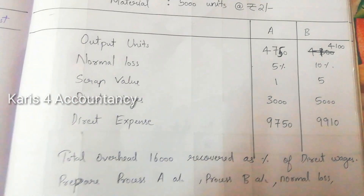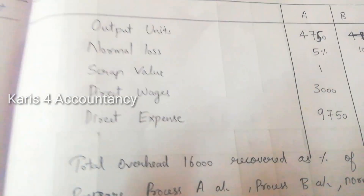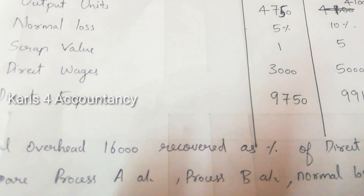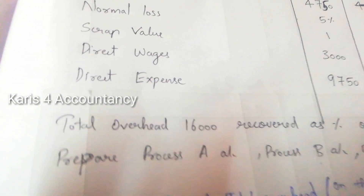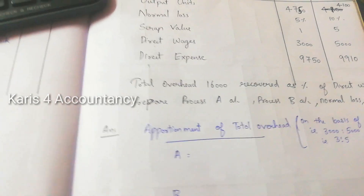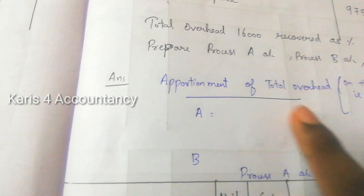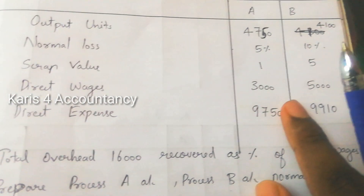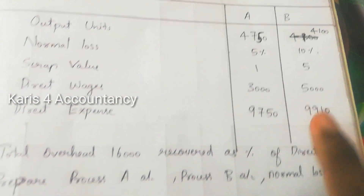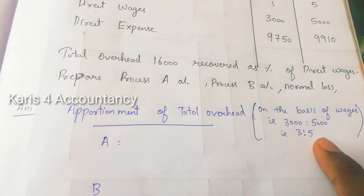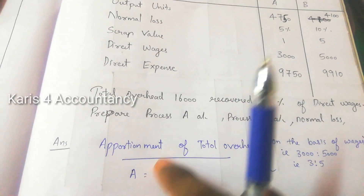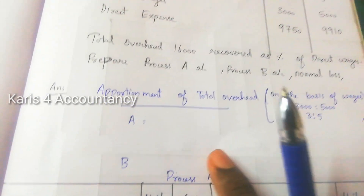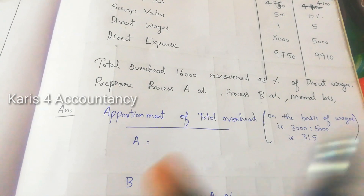Total overhead of Rs. 16,000 is recovered as a percentage of direct wages. The basis of direct wages: Process A is 3 and Process B is 5, so total is 8. Overhead for A = 16,000 × 3/8. Overhead for B = 16,000 × 5/8.